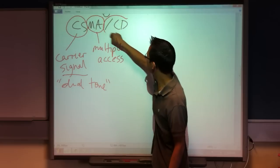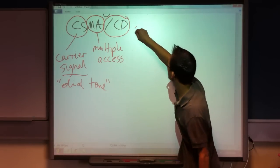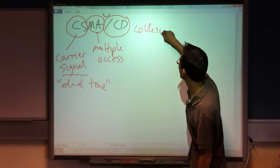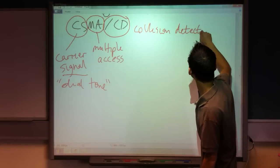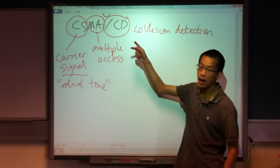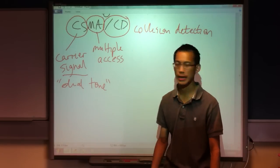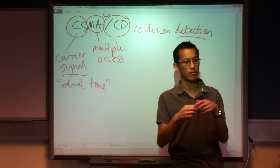This last bit on the end, the slash means with and the CD stands for collision detection. Collision detection. So this has rules for working out what does it look like when data collides. It can detect it and then it can deal with it.